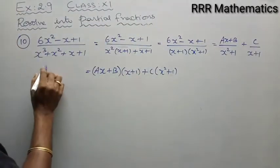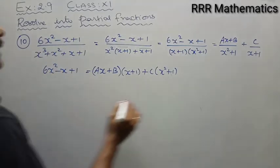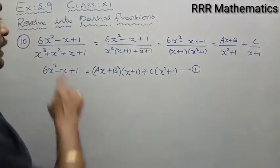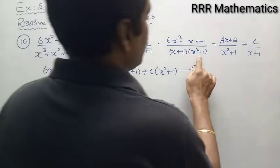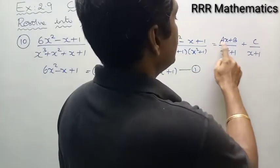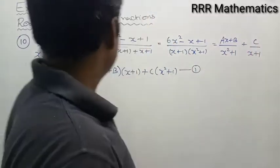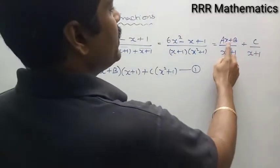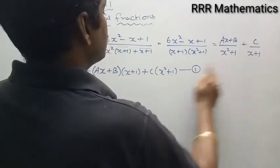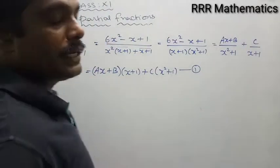This denominator is the same as our original, so the denominators cancel. After taking LCM, equation 1 becomes: 6x²-x+1 = (ax+b)(x+1) + c(x²+1), and the numerator-denominator cancels on both sides.